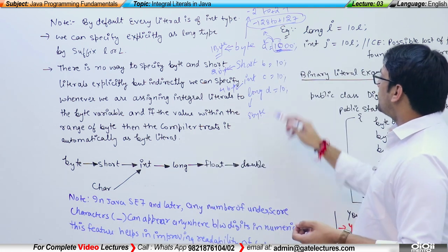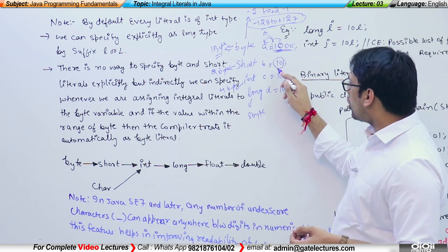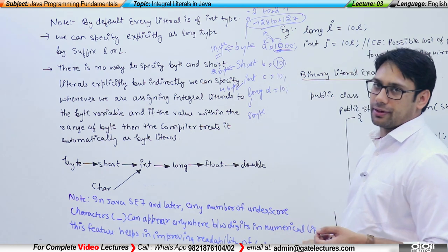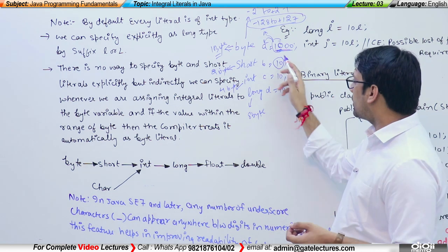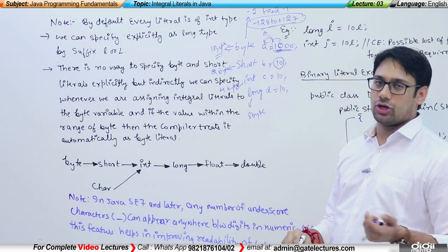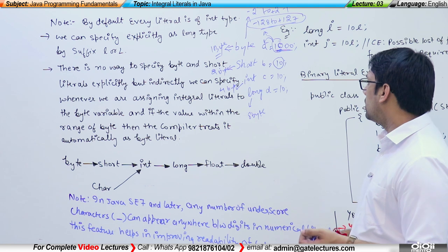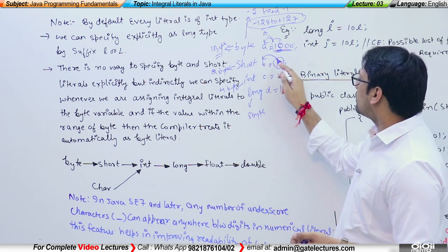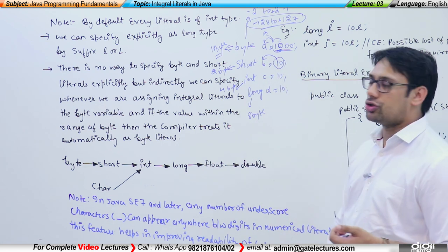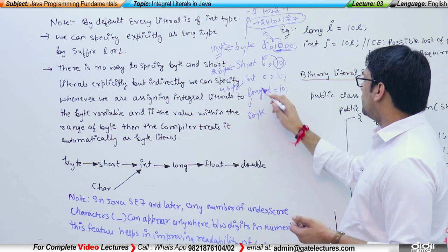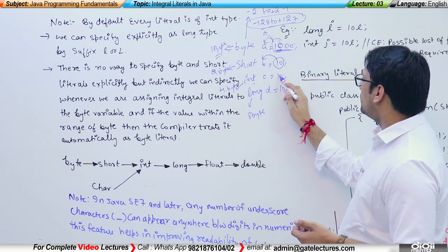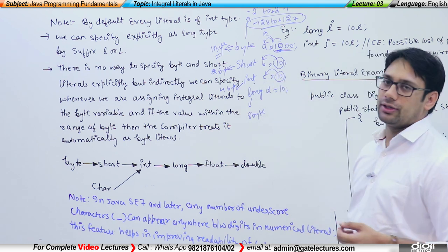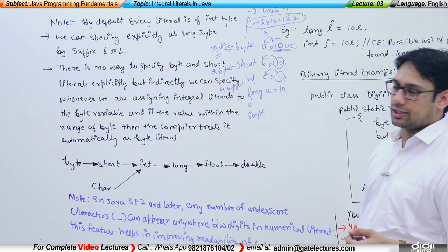The same happens with short. Short b is storing 10, and this 10 is again in the range of numbers that a short can store. Therefore, this integral literal is automatically converted to short. For integer c = 10, by default every integral literal is in the form of integer.